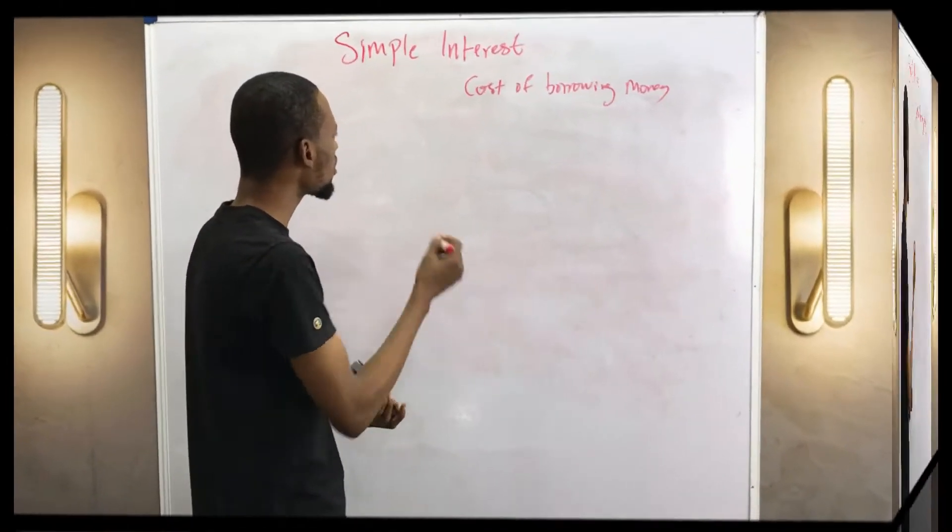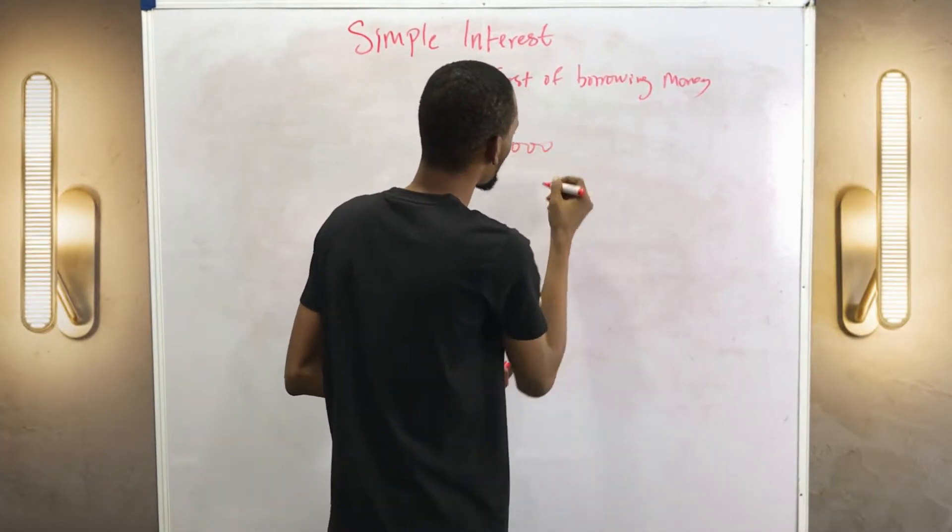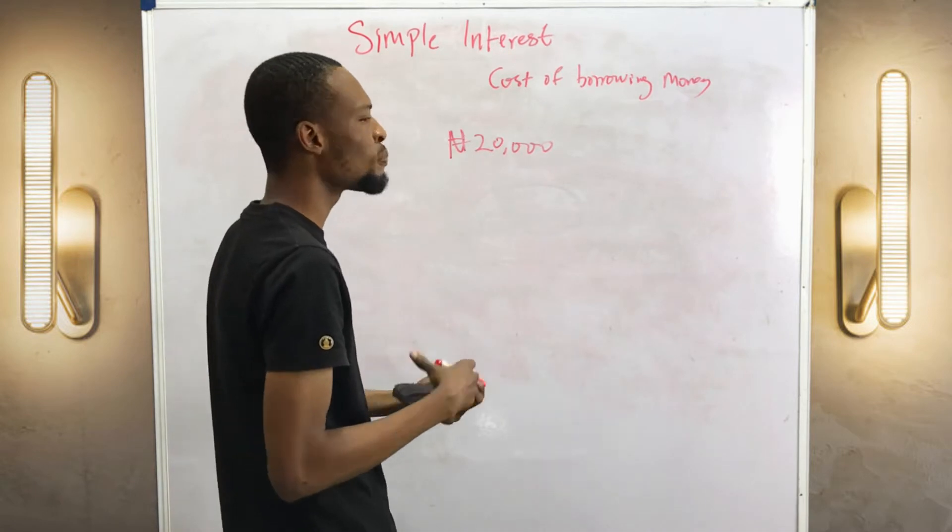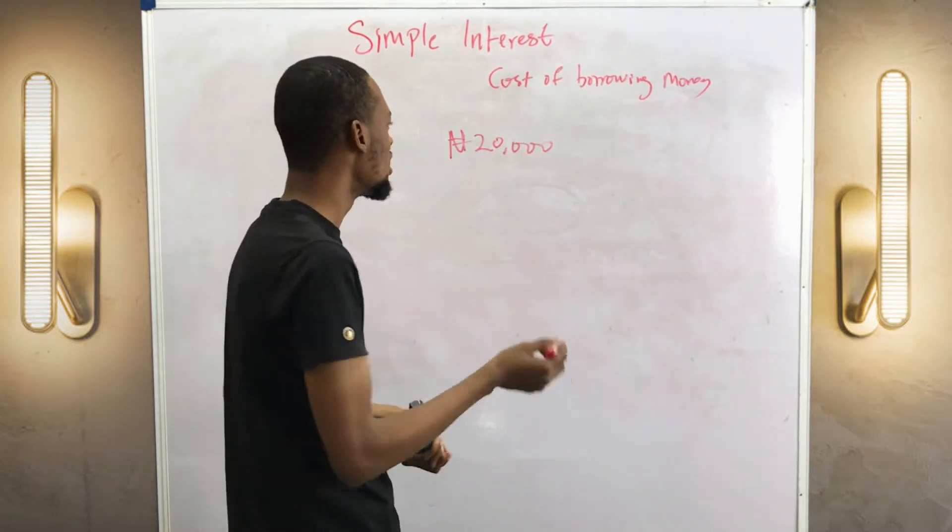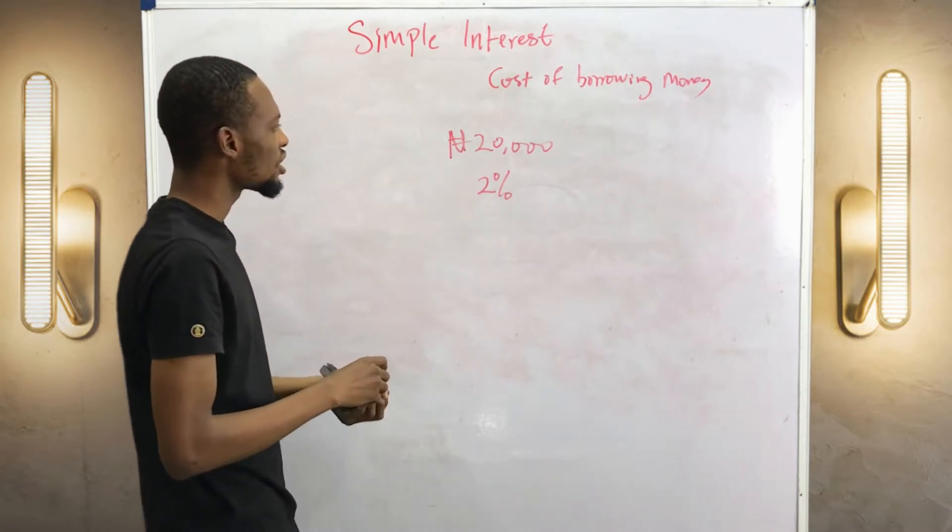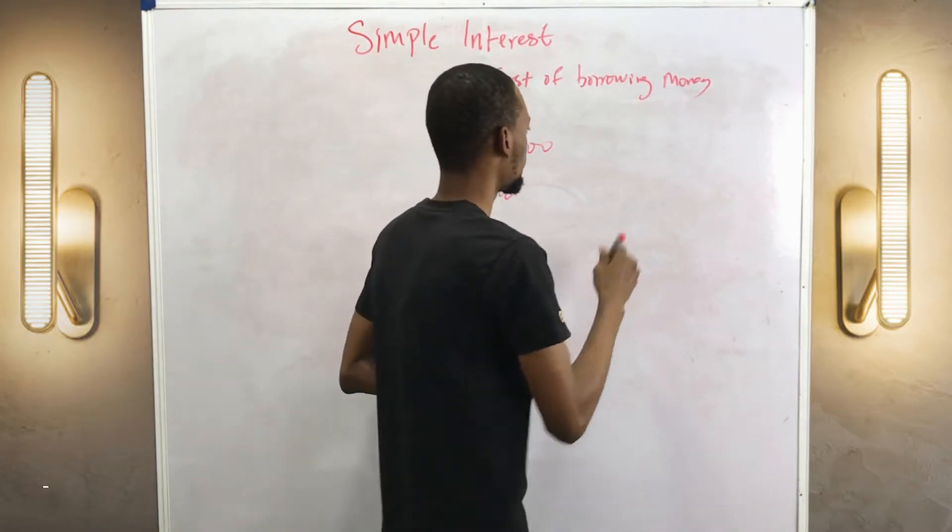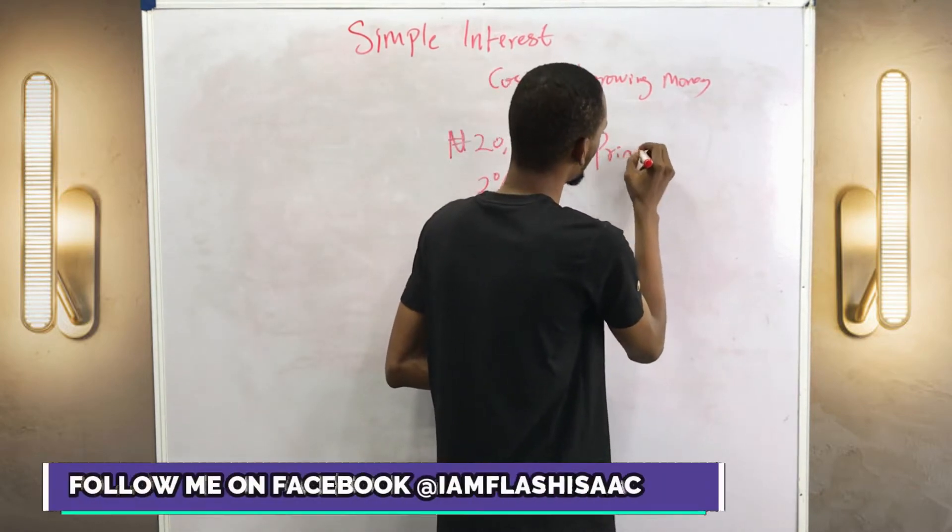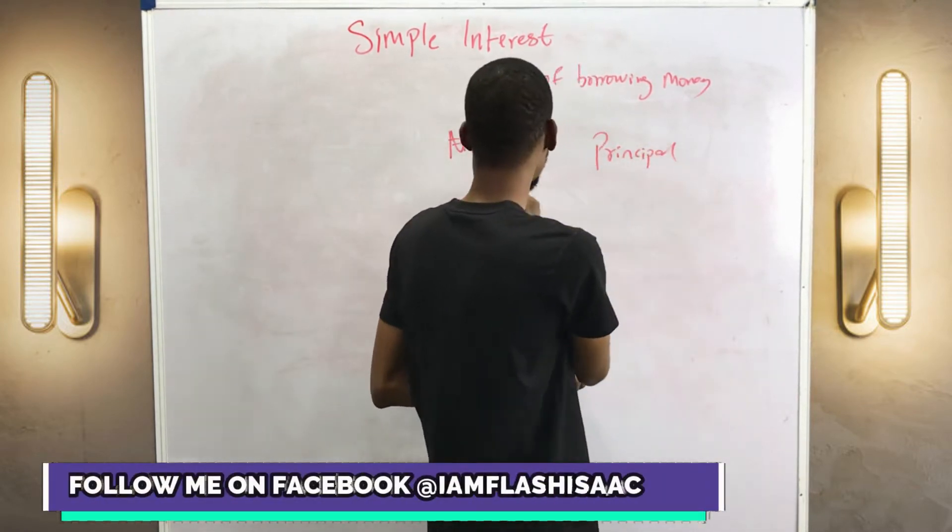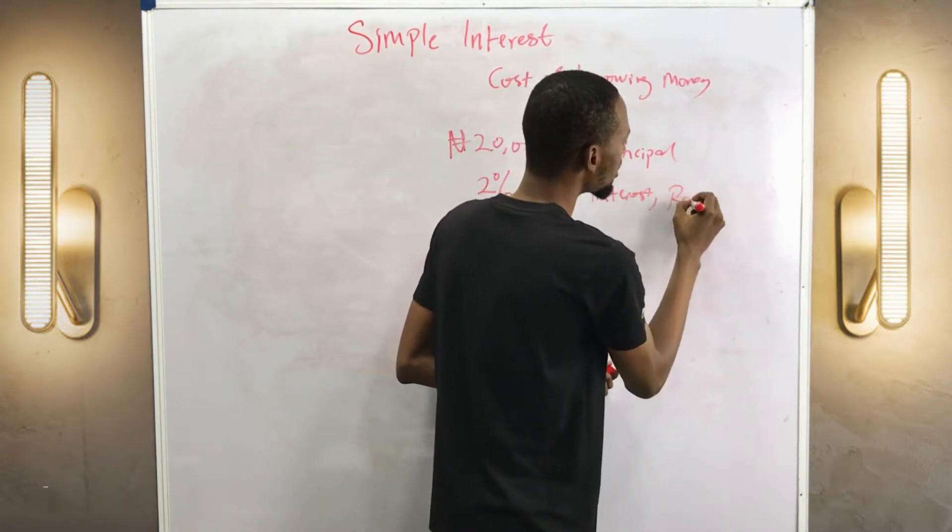So if you borrow 20,000 naira from the bank and you are asked to pay certain interest, let's say like two percent yearly, this money you are borrowing is the principal, while this is the interest or rate, interest rate.